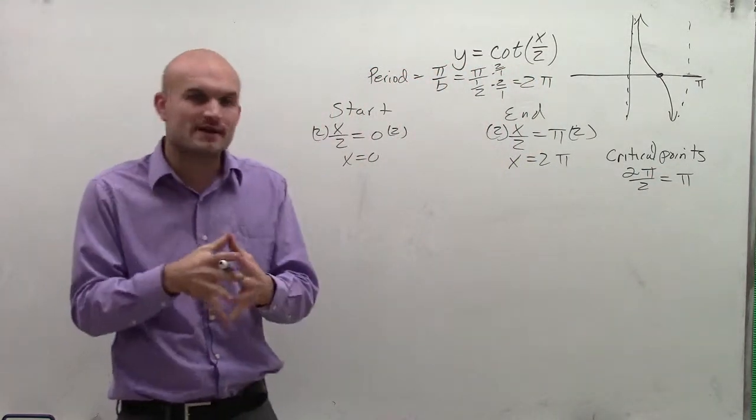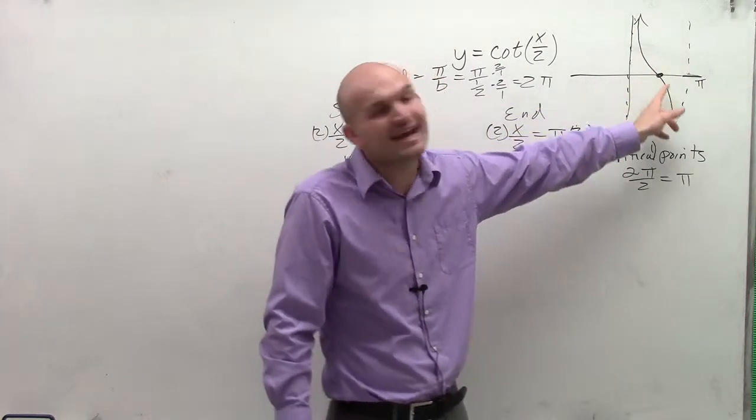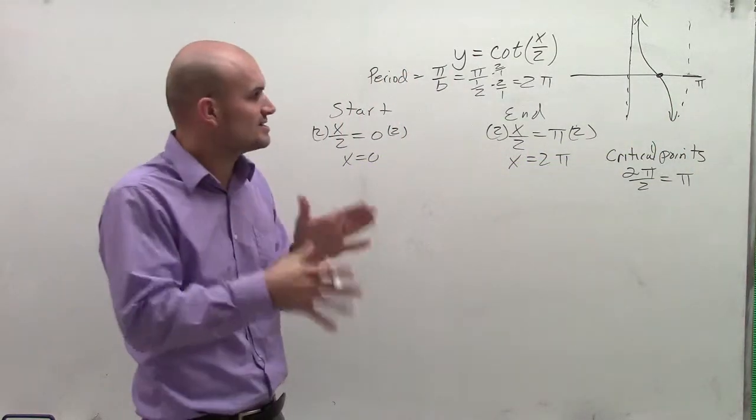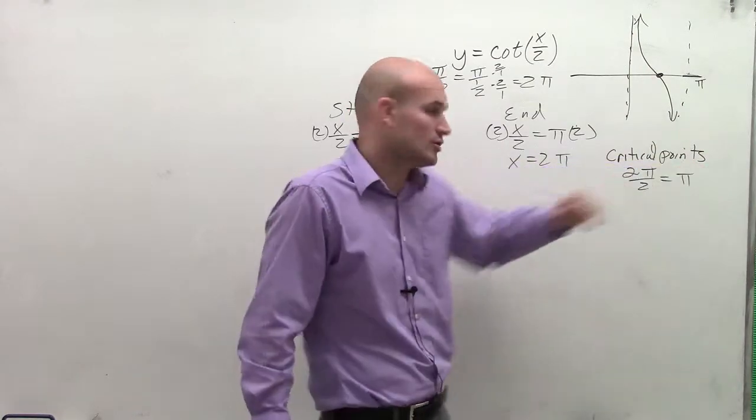Now the reason why we want to find our critical points is because the critical points for the cotangent and tangent graph are going to be your asymptotes and your x-intercepts. So that's why we want to keep on dividing by 2, because then what we'll notice is at every interval of pi, we're going to have a critical point.